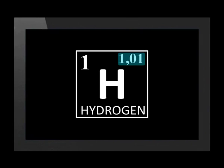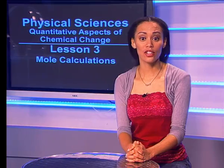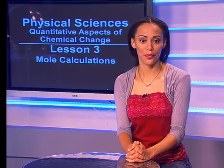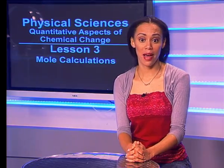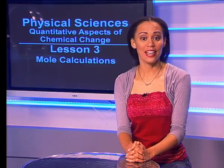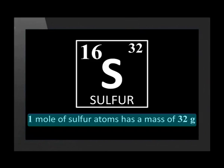The molar mass of an atom and the relative atomic mass have the same number but different units. Let's use sulfur as an example. The relative atomic mass of sulfur is 32, which means that the molar mass of sulfur is 32 grams per mole. In other words, one mole of sulfur atoms has a mass of 32 grams.